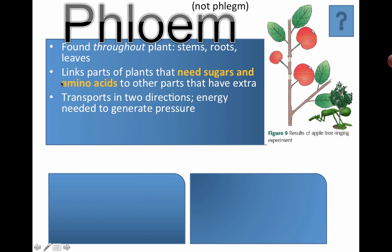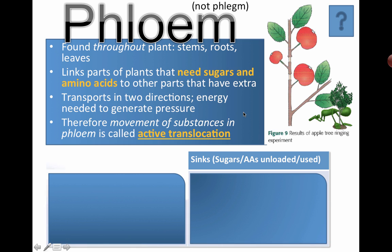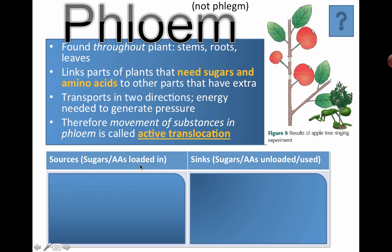Amino acids are also transported through phloem. Energy is required to do this, and it's called active translocation — so ATP is required. There are two more things to understand: the source and the sink. A source is where the sugars or amino acids are actually loaded in or produced, and sinks are where they are transported to and stored.